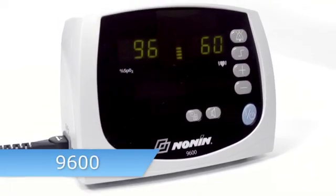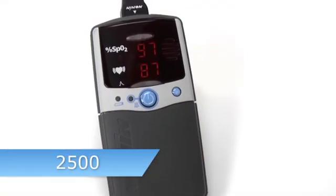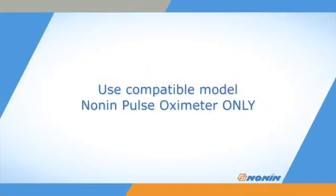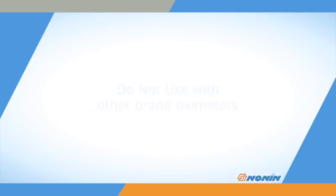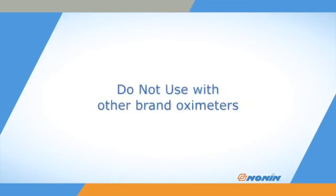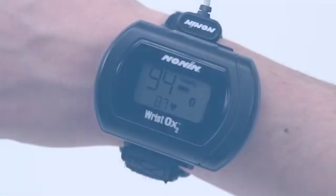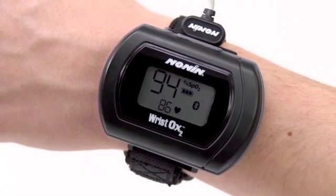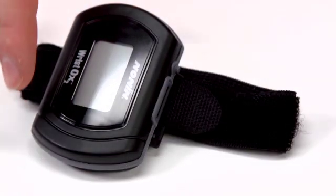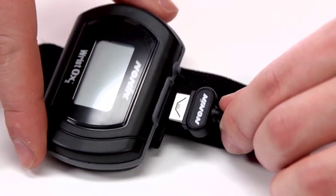8000JWO2 sensors are designed for use with Nonin brand pulse oximeters only. Do not use Nonin brand sensors with other brand pulse oximetry devices which may provide inaccurate results. 8000JWO2 sensors are specifically designed for the Nonin WristOx2 oximeter with a shorter cable length and special connector.